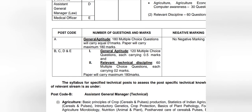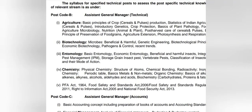For AGM Technical, the General Aptitude section has 120 questions each carrying 0.5 marks, and the Relevant Technical Discipline section has 60 questions each carrying 2 marks. The syllabus for the technical discipline is divided into five parts: Agriculture, Biotechnology, Entomology, Chemistry, and certain Acts.